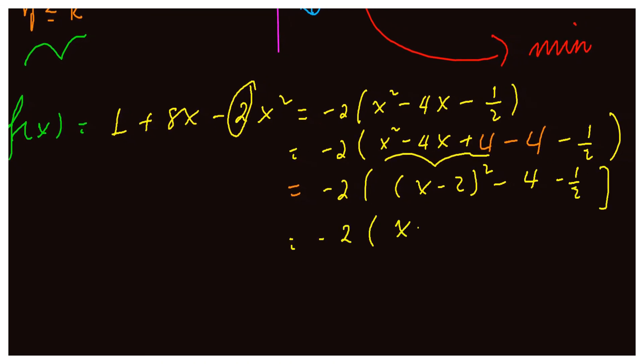So we will have (x - 2)² minus, when we add and subtract, 2 times 4 is 8, 8 minus minus 1 is minus 9, so we will get minus 9/2.